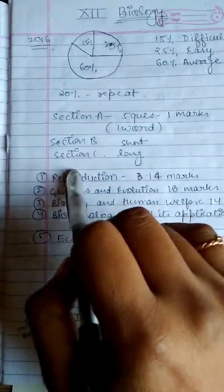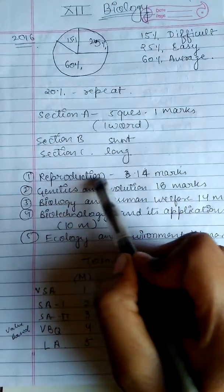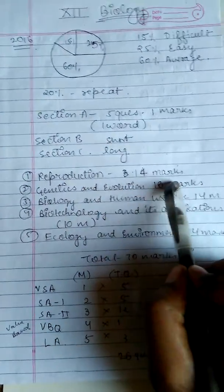These are the units which we will read in class 12. Like, first unit is reproduction. Reproduction is of 14 marks.